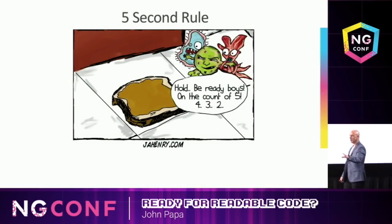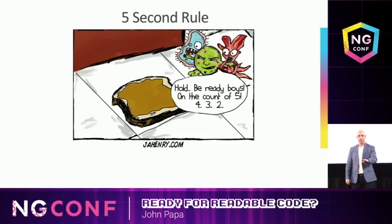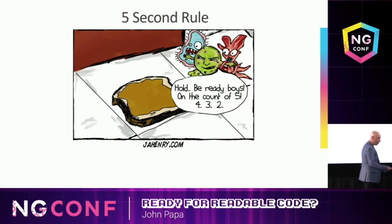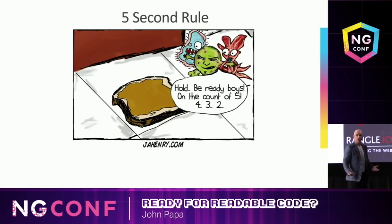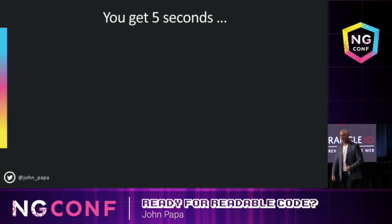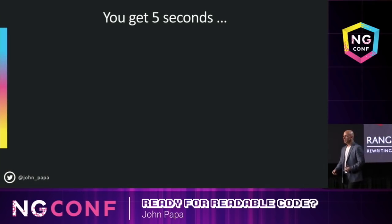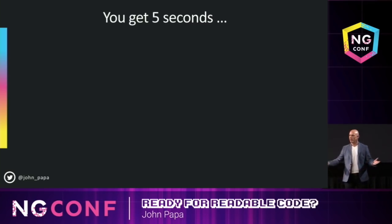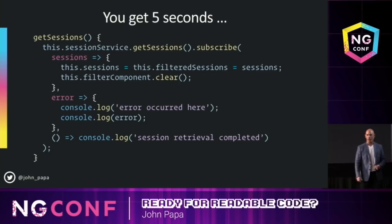Now, we all know the cookie rule, right? You drop a cookie, you have five seconds to pick it up and eat it. So what do we do in the coding world? I have this rule I tell my developers on teams — we have the five-second rule when reading code, doing code reviews. If you can't understand the code in five seconds, that's probably a smell. That's probably a sign you should refactor a little bit. So, in five seconds, can you figure this out? One, two, three, four, five. No, you couldn't.